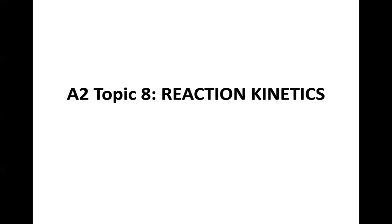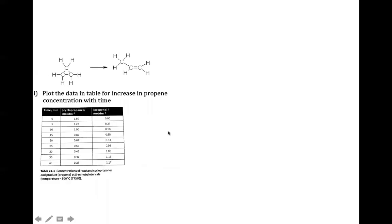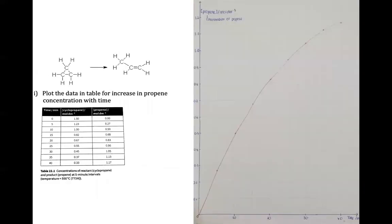If this were a physical class, I would have asked you to plot this graph. This is a reaction where you can see the reactants turning into products. This reaction is called isomerization — you don't need to know that. In the data, they give you the time taken for the reaction, and the concentration of cyclopropane (your reactant) and propene (your product). They want you to plot a graph, and this is how the graph looks.